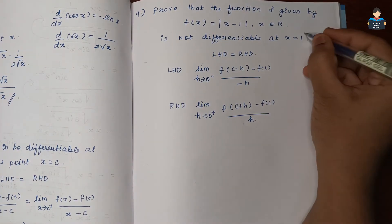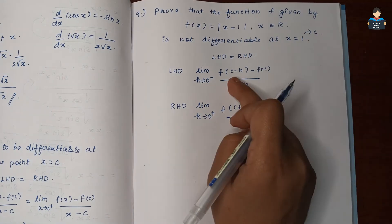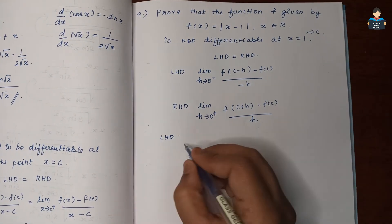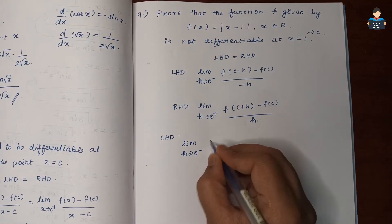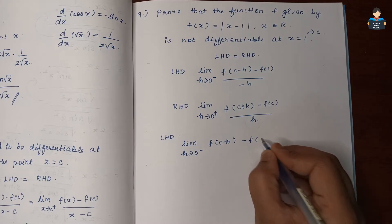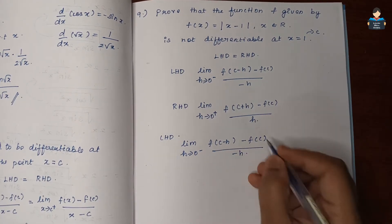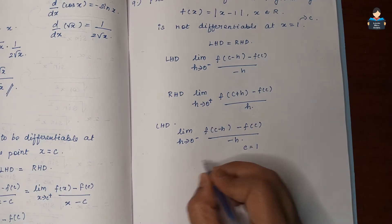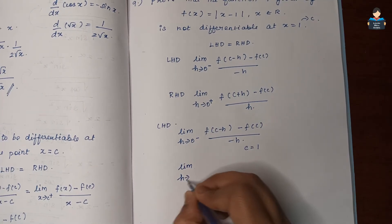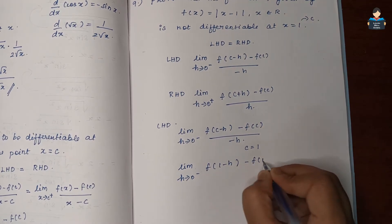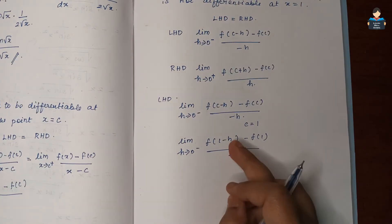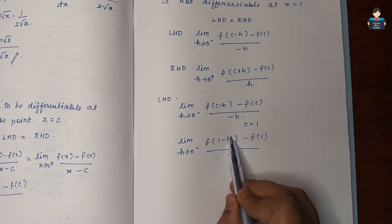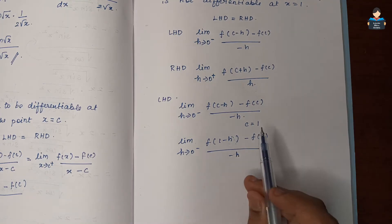So c = 1. First, we compute the left-hand derivative: limit h tends to 0 minus, f(1 - h) - f(1) by (-h). We substitute into f(x) = |x - 1|.